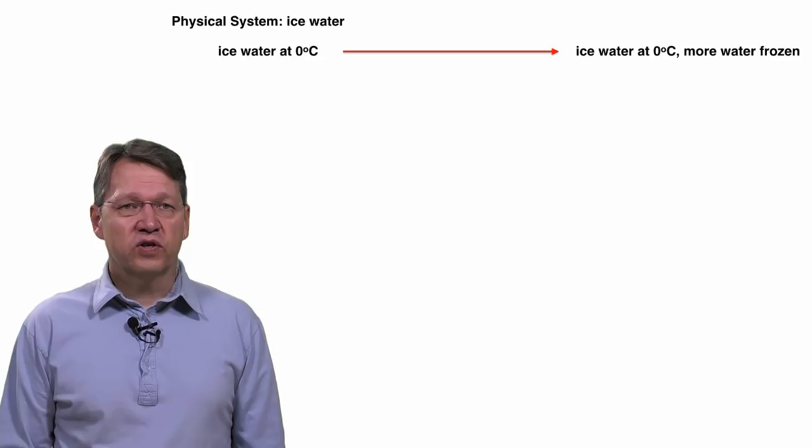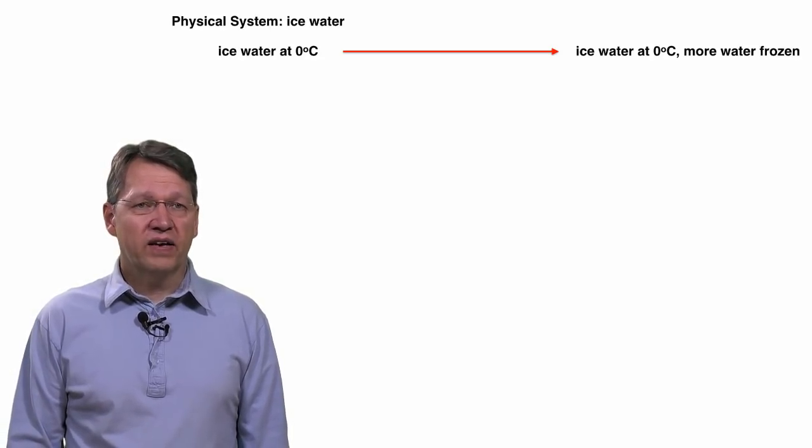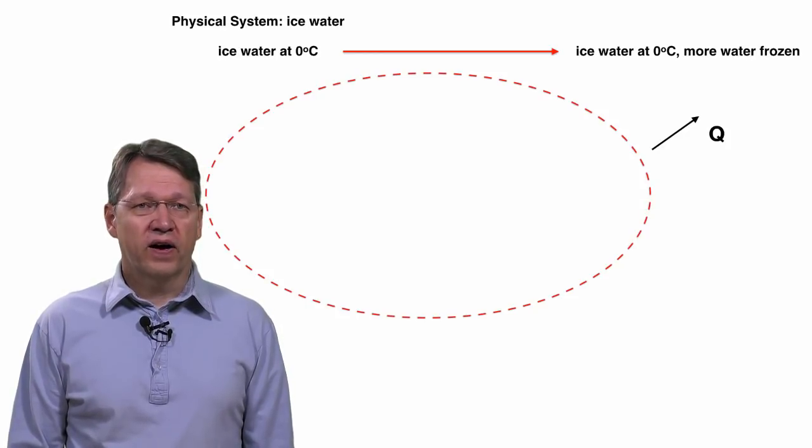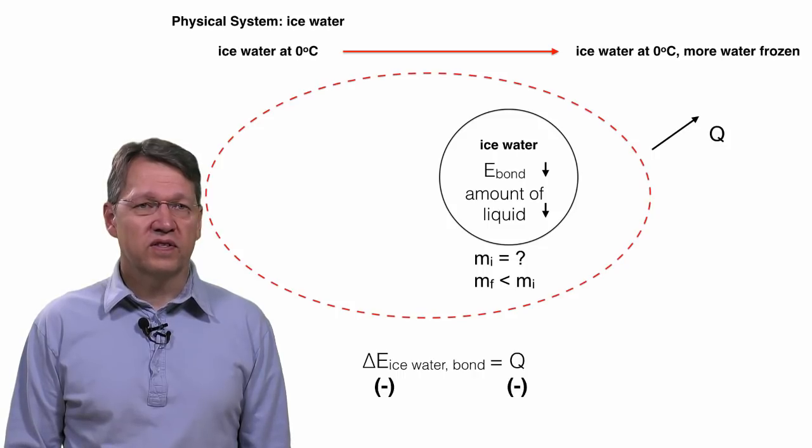What would have happened if we had chosen our physical system to be just the ice water? Then we would have had an open system, since heat is flowing out of the water. Our final equation would be that the change in the bond energy of the water was equal to the heat transferred to the system, which in this case was negative.